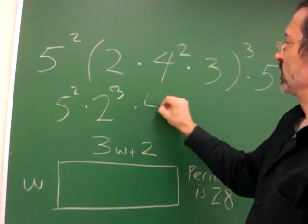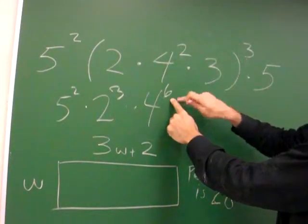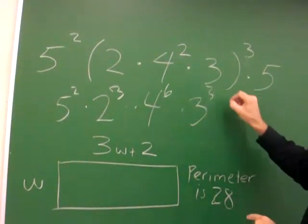4 squared makes 4 to the 6th because it's squared, squared, squared, 6, times 3 cubed, times 5.